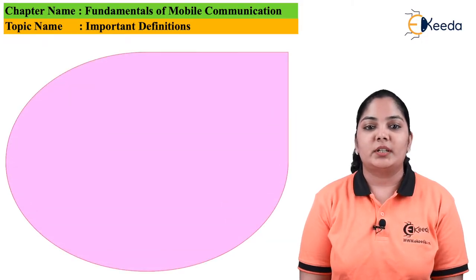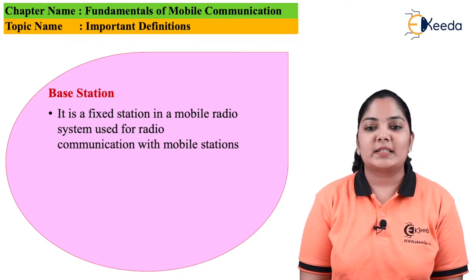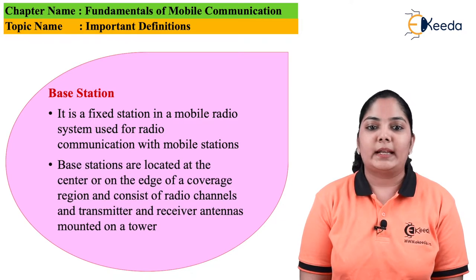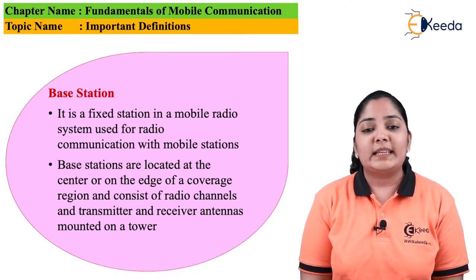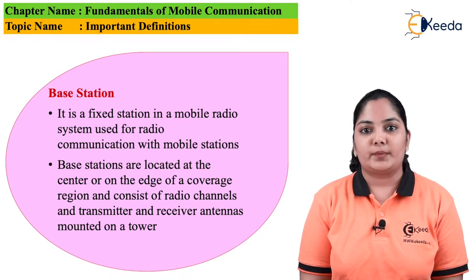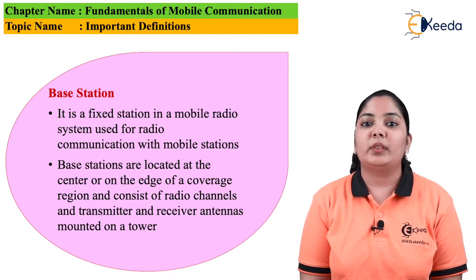First definition: Base station. It is a fixed station in mobile radio systems used for radio communication with mobile stations. Base stations are located at the center or on the edge of the coverage region and consist of radio channels, transmitter and receiver antennas mounted on the tower. On the towers of these base stations, there is a transceiver — a transmitter and receiver — used for communication with mobile stations.